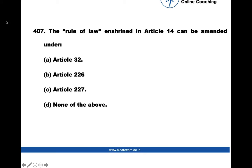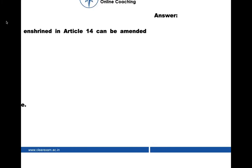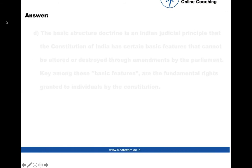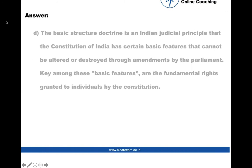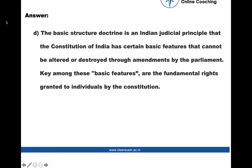The rule of law enshrined in Article 14 can be amended under: (a) Article 32, (b) Article 226, (c) Article 227, or (d) none of the above. The answer is option D. The Basic Structure Doctrine is an Indian judicial principle that the Constitution of India has certain basic features that cannot be altered or destroyed through amendments by the Parliament.